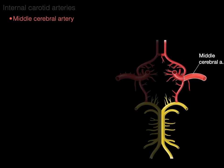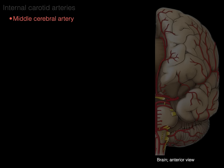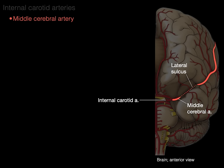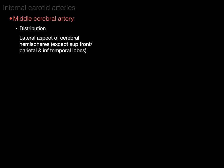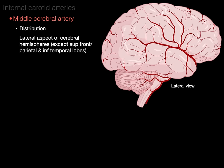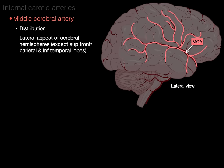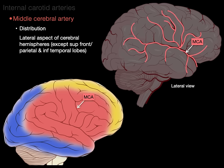The middle cerebral artery is so named because it's in the middle of the cerebrum. In an anterior view of the brain, the middle cerebral artery runs within the lateral sulcus. Its distribution covers the lateral aspect of the cerebral hemispheres, except for the superior portion of the frontal and parietal lobes and the inferior part of the temporal lobe. Everything in pink shows the distribution supplied by the middle cerebral artery, with the anterior cerebral and posterior cerebral arteries supplying those remaining two areas.